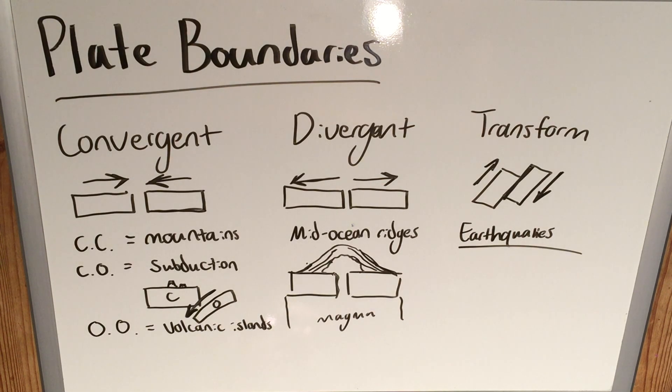So those are the three types of plate boundaries in a nutshell: convergent coming together, divergent moving apart, and transform scraping past each other. Hopefully this was informative, otherwise good review. Hope you guys enjoyed and I will see you all in the next video. Ciao.